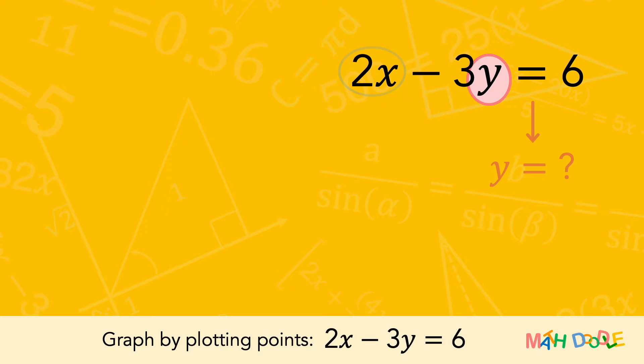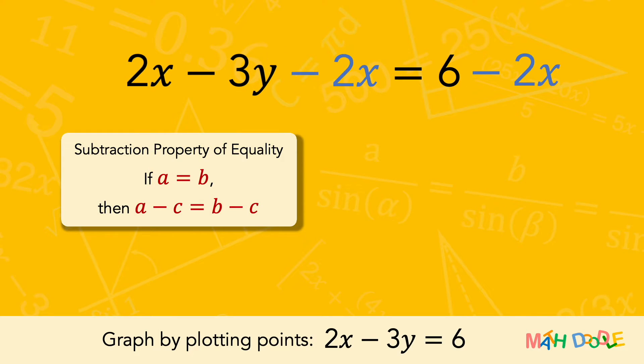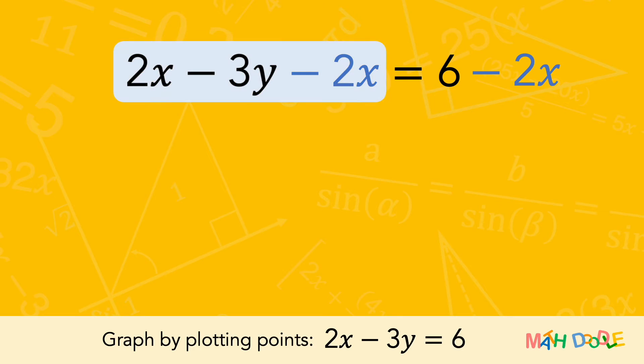So, we are going to eliminate 2x on the left side by subtracting 2x. Then, the left side of the equation is simplified to minus 3y, and the right side of the equation can be rearranged to minus 2x plus 6.